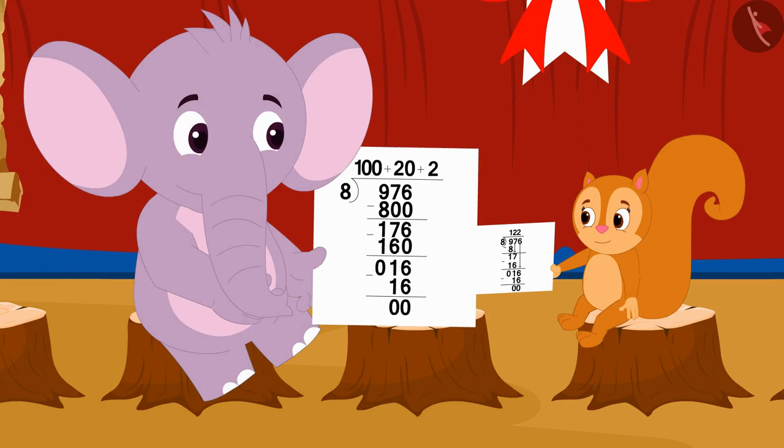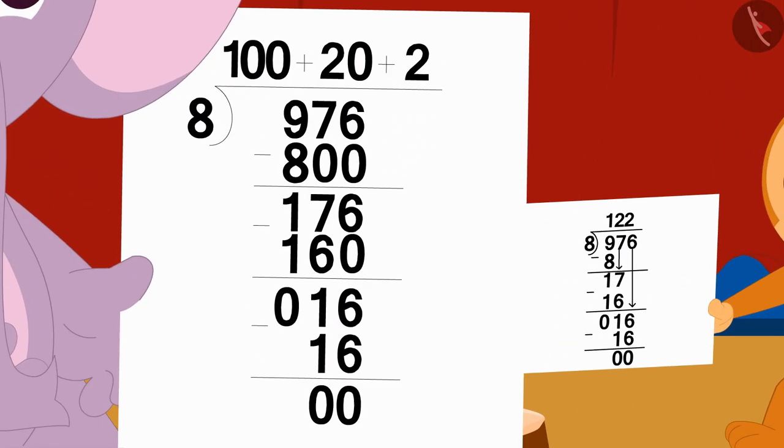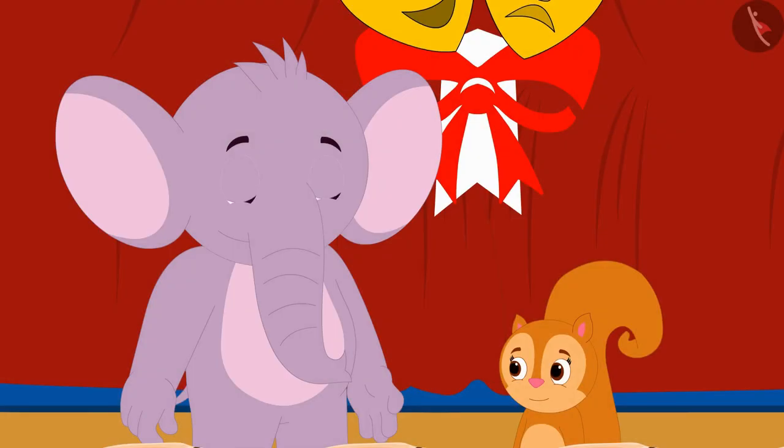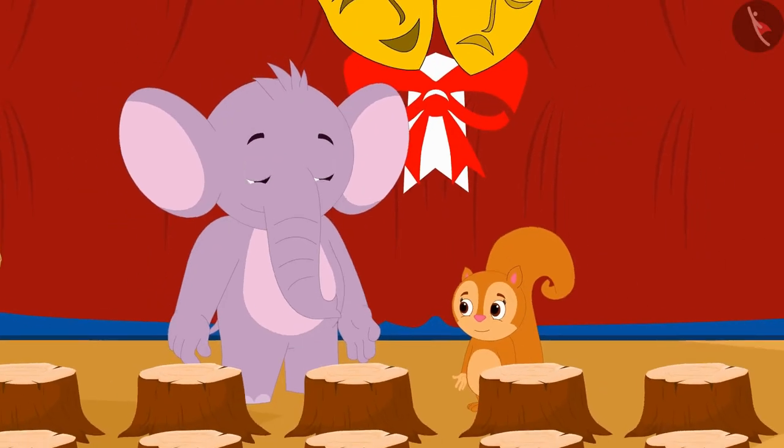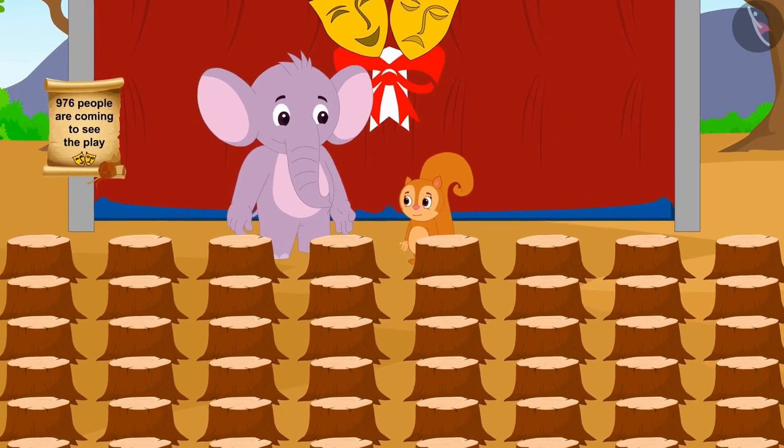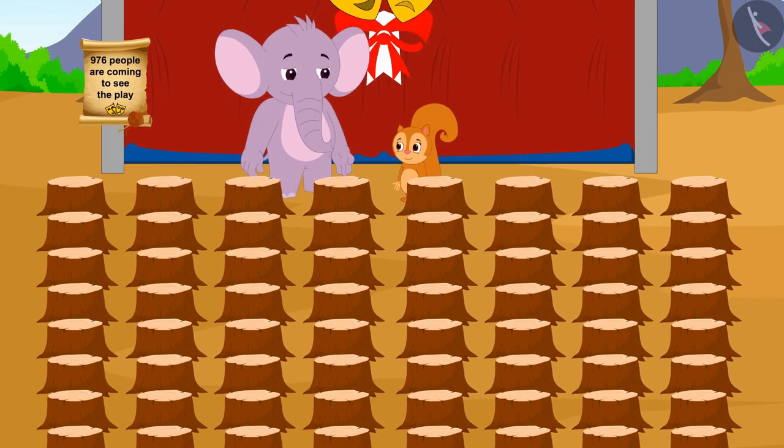Chanda and Appu were shocked when they saw each other's division methods. Both used different procedures, but both had exactly the same answer. Chanda took the help of Appu and quickly made 122 rows of 8 chairs each and used all the 976 chairs.